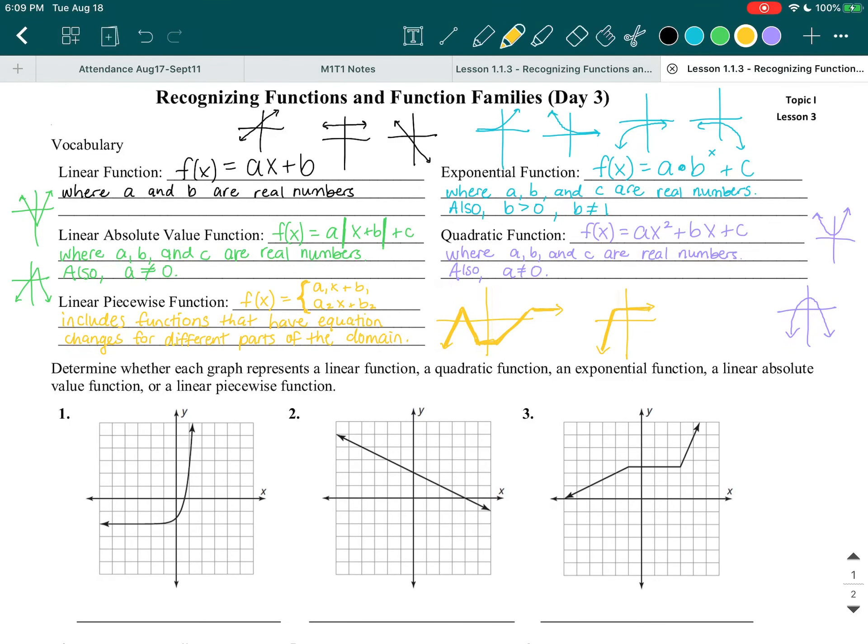So I'll just scroll a little bit. Let's do examples 1, 2, and 3 together. So let's read the directions. Determine whether each graph represents a linear function, a quadratic function, or an exponential function, a linear absolute value function, or a linear piecewise function. So we're going to see which type is it.